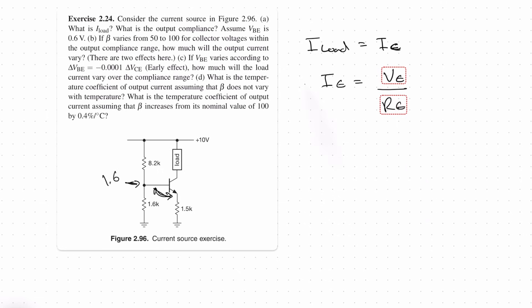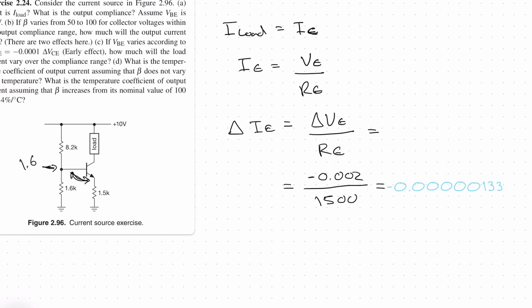So IE is equal to VE divided by RE. So essentially what we're saying is the relationship for temperature is going to be this equation, but the delta. So ΔIE is equal to ΔVE divided by RE. We know that RE is 1500. So minus 0.002 divided by 1500. This tells us the absolute change in emitter current per degree Celsius is going to be 1.33 microamps per degree C. So that is the solution for the first part of D. So the current goes up with temperature. Don't forget the minus sign.